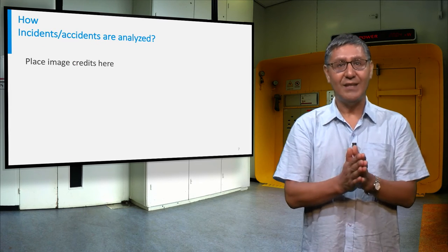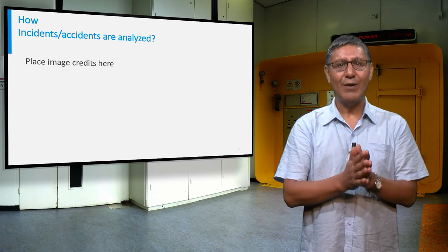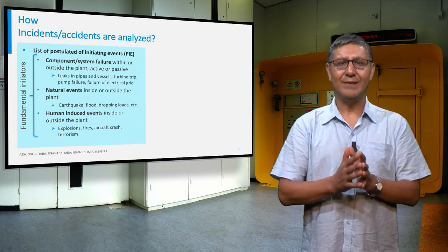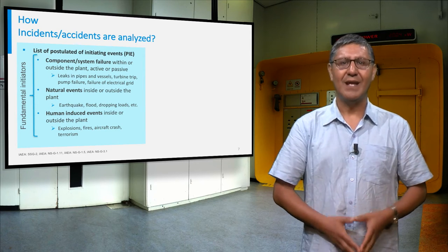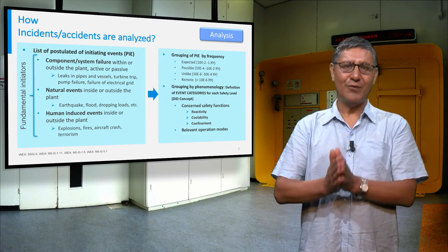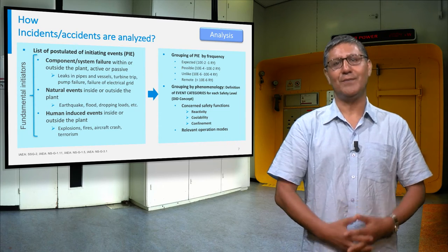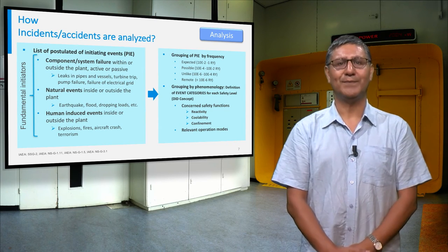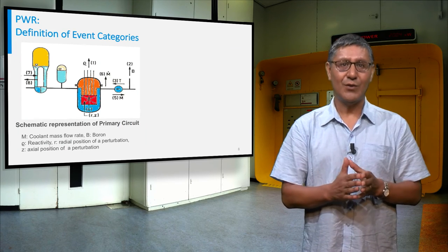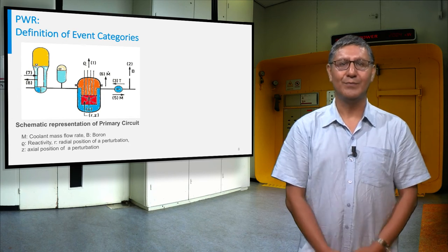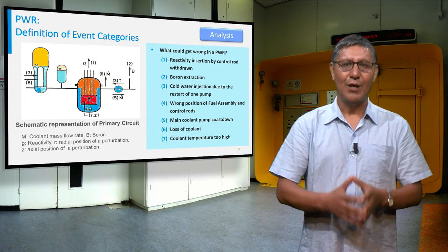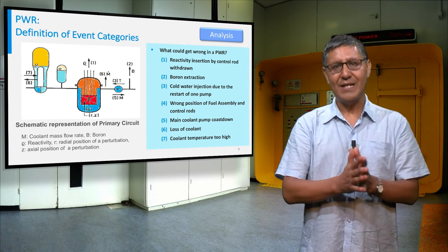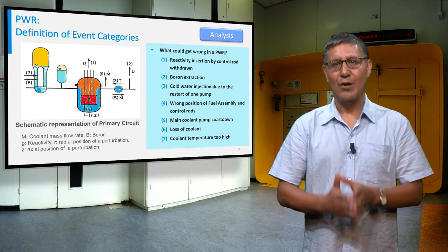Before looking at the details of each accident, let's review the method to evaluate accidents in nuclear power plants. First, a list of the major postulated initiating events (PEAs) must be elaborated for each type of nuclear power plant. Then, the PEAs can be grouped based on frequency of occurrence and by phenomenology. Each safety level defines event categories considering safety functions and operational modes. The figure shows a sketch of a pressurized water reactor primary loop. According to the phenomenological approach, you evaluate all possibilities for failures or malfunctions. These events are then evaluated with numerical simulation tools for safety demonstration purposes.